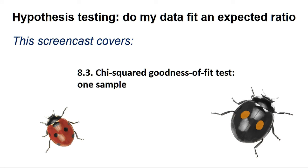The chi-squared goodness-of-fit test works on count data and asks if the distribution of counts between three or more categories is what you would have expected. We have to inform the programme as to what we would expect for the number of cases in each category. We do this by telling the programme the proportion of the sample we would expect to fall in each category, expressed as a fraction.